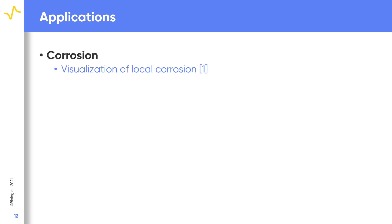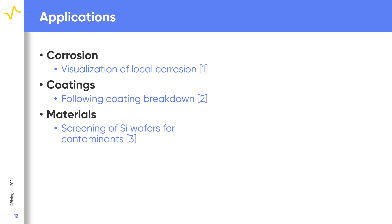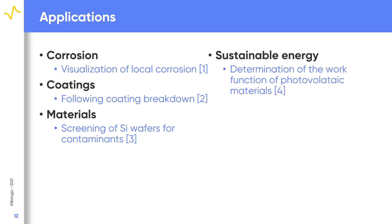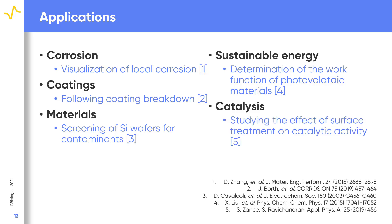SKP has found widespread use in a number of fields. It is used extensively in corrosion, particularly to visualize local corrosion. In coatings, it has been used to follow coating breakdown. In materials research, SKP has been used to screen for contaminants on silicon wafers. SKP is one of very few techniques which can be used to determine the work function of a material, and therefore has been of particular use in sustainable energy to investigate photovoltaic materials. Finally, we have seen use in catalysis studies for looking at the effect of surface treatment on catalytic activity.